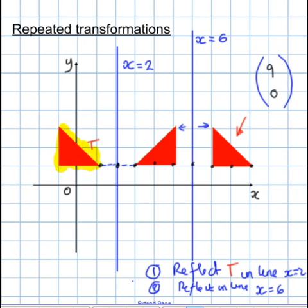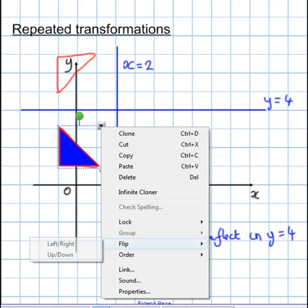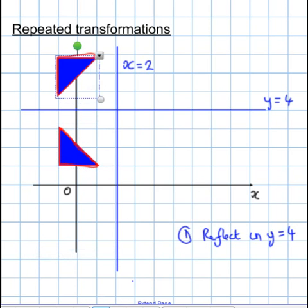Now let's look at a slightly harder one. The first reflection is going to be, I'm going to reflect in the line y equals 4. Here we go. That's better, isn't it? And then flip it up. And there it goes.